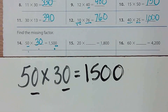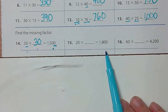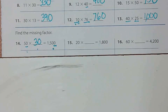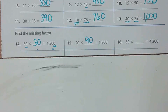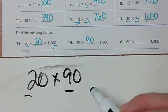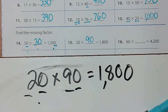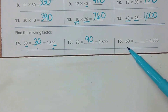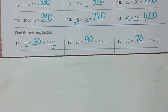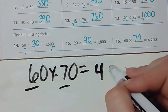Number 15: 20 times what equals 1800? Let's try 90 — 2 times 9 is 18, and we add two zeros — that's 1800. Correct! Number 16: 60 times something equals 4200. We think it's 70 — let's check: 60 times 70, 6 times 7 is 42, add two zeros — 4200. Yes, correct!